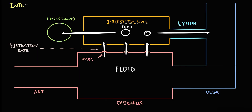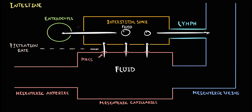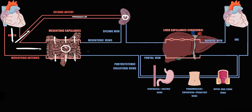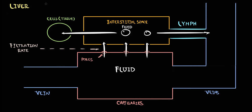In the case of the intestine, mesenteric arteries deliver blood to mesenteric capillaries, and mesenteric veins provide outflow of blood from capillaries. Cells that compose intestinal tissue are called enterocytes. Blood from the spleen via the splenic vein and from the intestine via mesenteric veins is delivered to the portal vein. The portal vein drains blood into the liver, where fluid exchange occurs in liver capillaries called sinusoids.